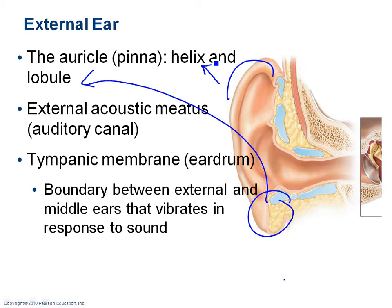The external acoustic meatus — normally called the auditory canal — is the section leading inward. Inside the auditory canal there is skin, an epithelial tissue layer, as well as hairs, sebaceous glands to provide oil, and a modified sweat gland called the ceruminous gland, which produces earwax. The main purpose of earwax is to stop foreign objects from getting in and to repel pests.